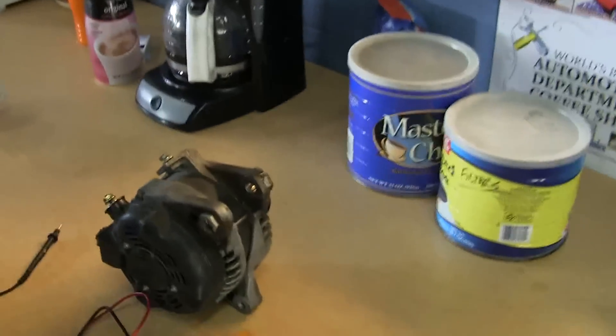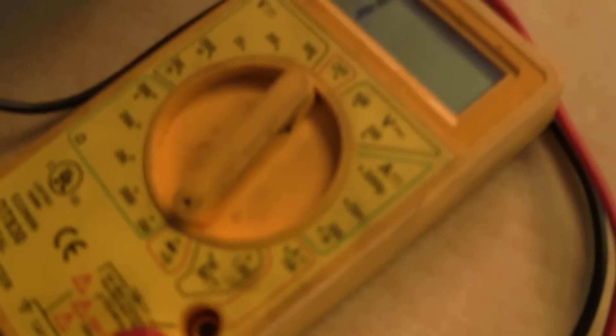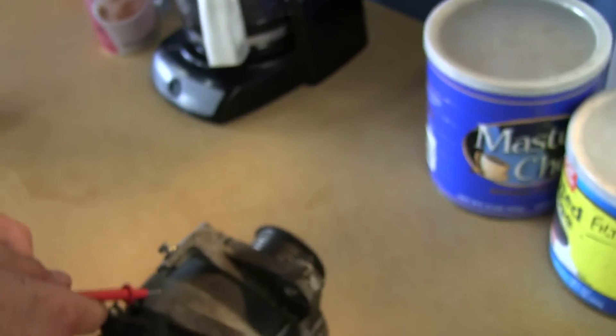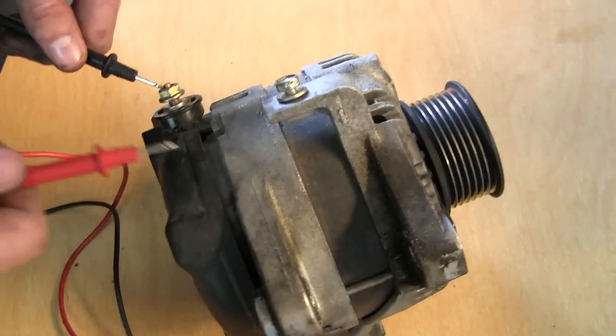Doing a diode test on this to see if it's any good. So let's do that with our little cheap $10 meter. Notice we got the cheap $10 meter set on diode check. And we got this thing, and he's going to the big post on the alternator and the frame.